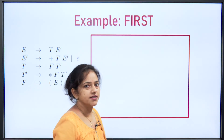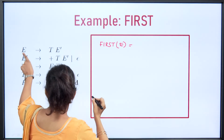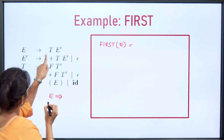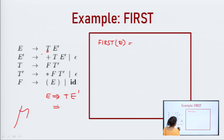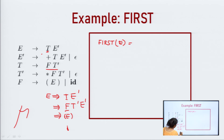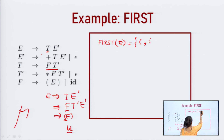We will obtain FIRST for every non-terminal. Suppose we are obtaining FIRST of capital E. On the right-hand side, we have T E'. Since we have a non-terminal, in place of T we can write F T', and in place of F we can write either '(' E ')' or 'id'. So F will derive strings whose starting terminal is '(' or 'id'. Thus, FIRST(E) = { '(', id }. We have only one alternate, so this is FIRST(E).